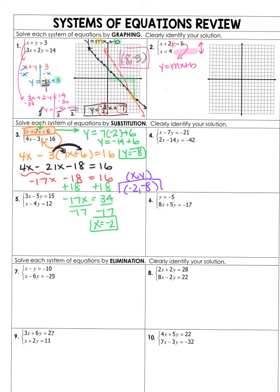I actually want you to skip and try number 6 on your own, because it's most like the one I just did. It gives you that y equals negative 5, so think about that when you begin this one.